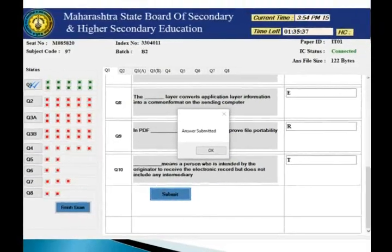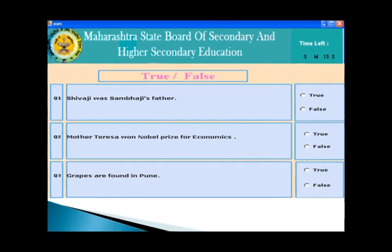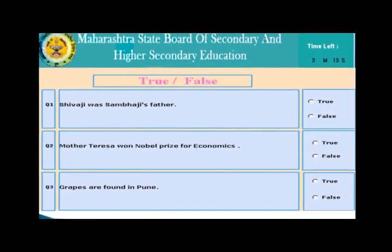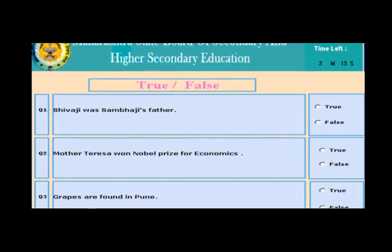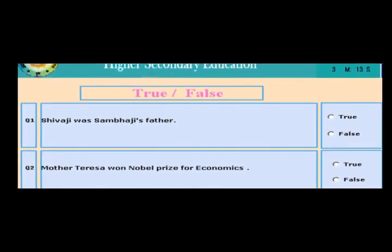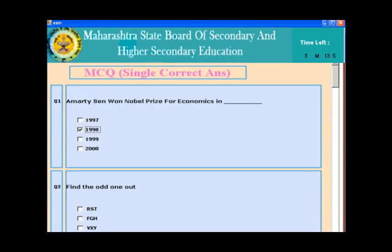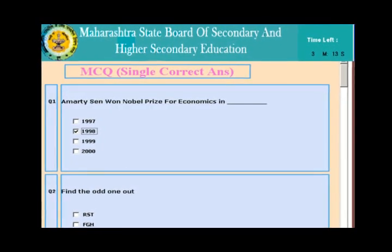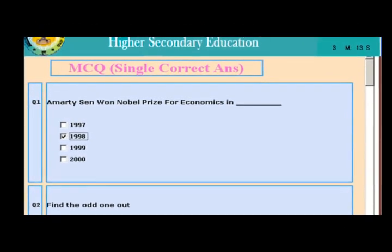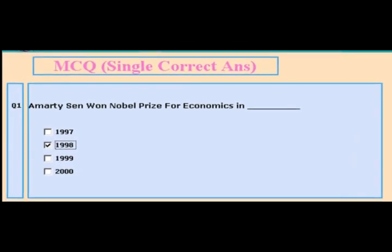Let's have a look at other question types. This is a true or false question — you click to determine whether the answer is true or false. For MCQ1 questions, the board provides a checkbox rather than a radio button, so it is possible to select multiple answers.